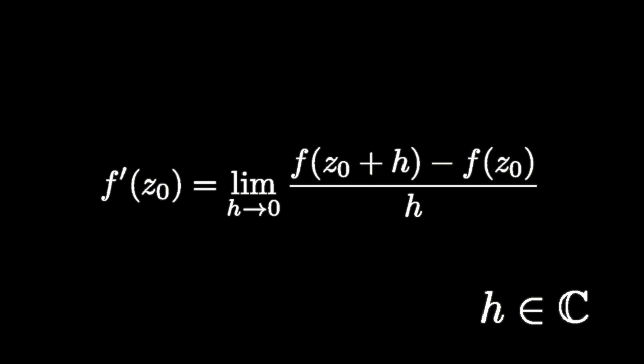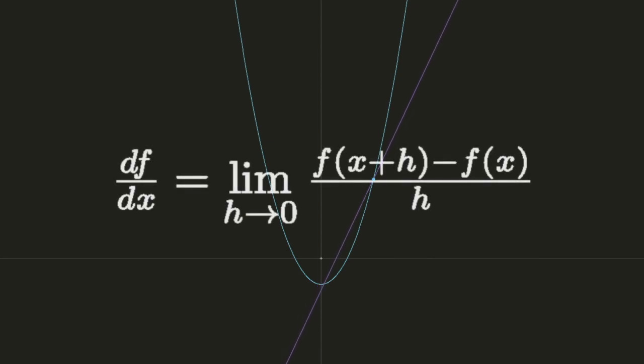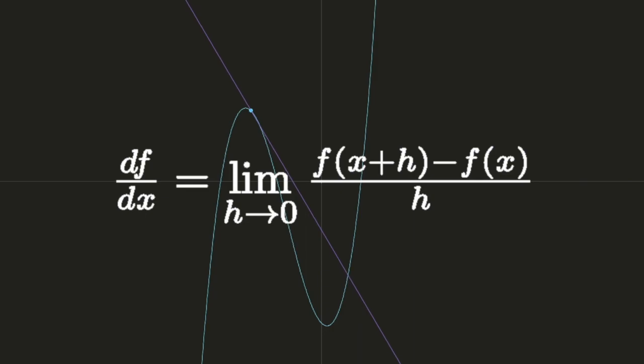It really needs to be emphasized that in this limit, h is a complex number which can approach 0 from any direction. Let's compare this with the derivative of a function of one real variable. In that case, there is only one direction to travel towards the limiting value, but in the case of complex differentiable functions, there is no restriction on how h approaches 0 in the complex plane.